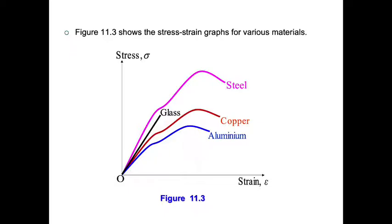This is an example stress-strain graph for various materials. We have steel, glass, copper, and aluminum. We have discussed before that steel, copper, and aluminum are ductile materials, and glass is the brittle material. Ductile materials undergo both elastic and plastic deformation. Meanwhile, glass is only undergoing elastic deformation. Up to this point, it breaks already.